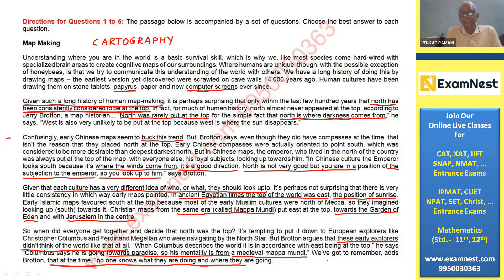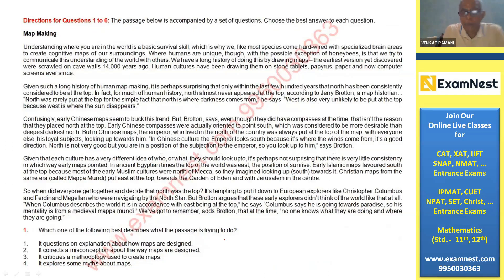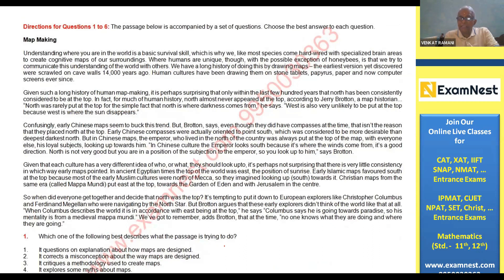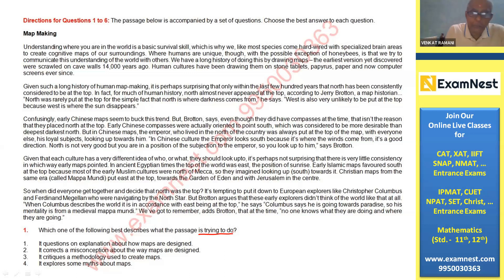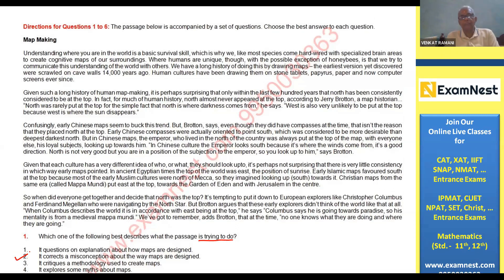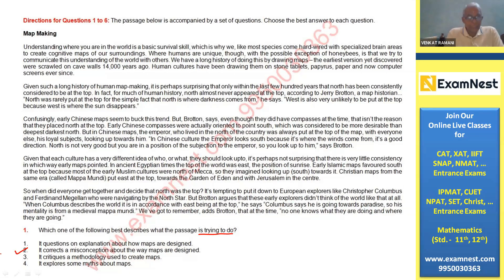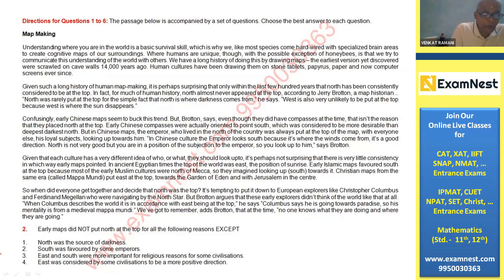At that time, no one knew what they were doing or where they were going, so the passage leaves that without assigning a reason. The question asks: which best describes what the passage is trying to do? Because the last sentence says no one knows what they are doing or where they are going, there have been so many wrong notions about map making. The passage is trying to correct those wrong notions about the way maps are designed — option two is correct: it corrects a misconception about the way maps are designed.